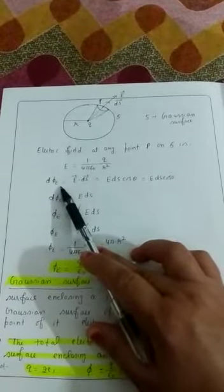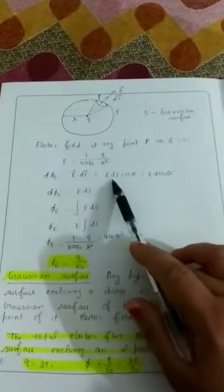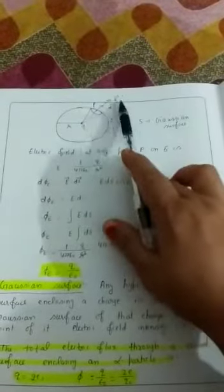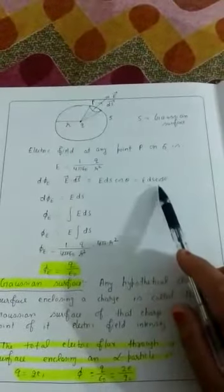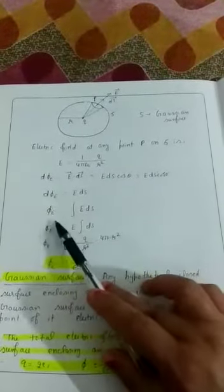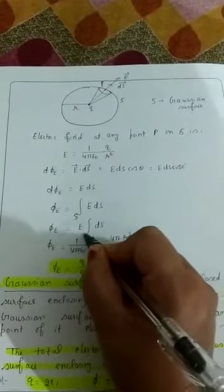d phi means small flux due to this element, this can be written as E dot dS. Dot means cos theta. Theta is 0 degrees because E and dS are both in same direction, cos 0 means 1. Total flux, we integrate over total surface area that is S.